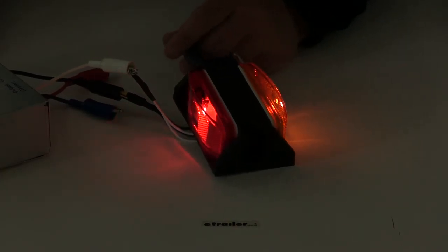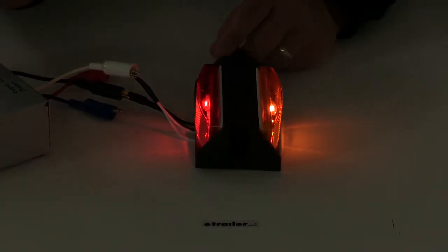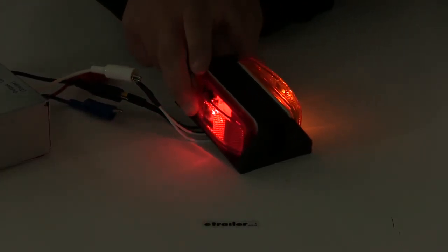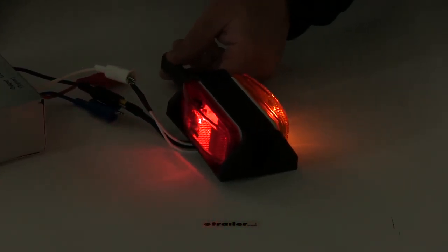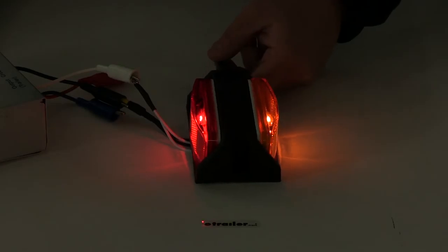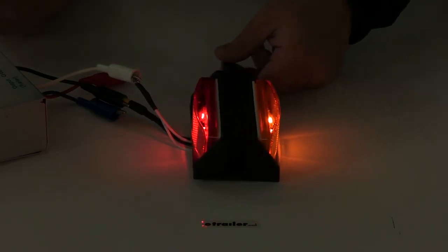You can see here that this sends out a nice consistent signal. You've got the amber on this side, the red on this side. And again, this functions as both front and rear clearance lights for trailers more than 80 inches wide.